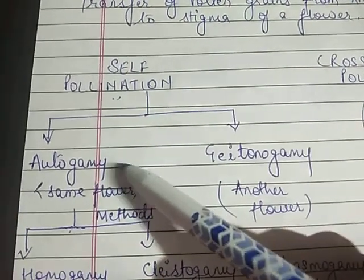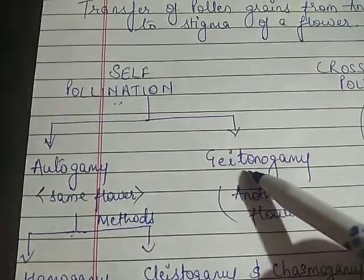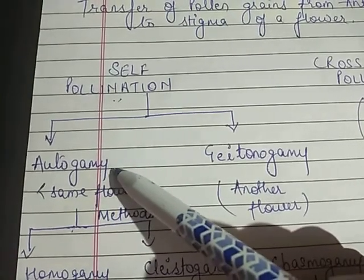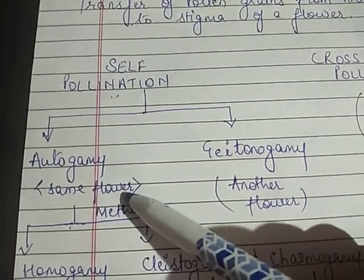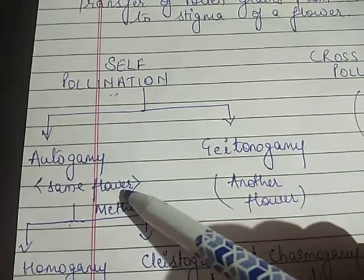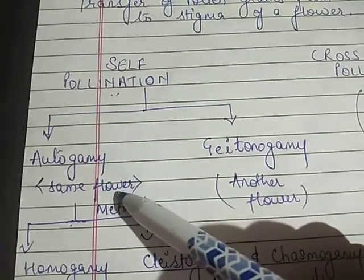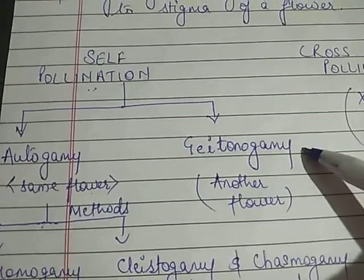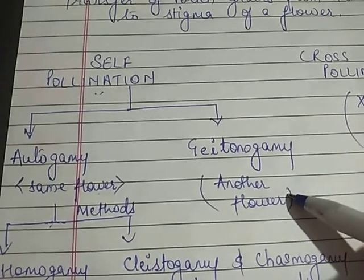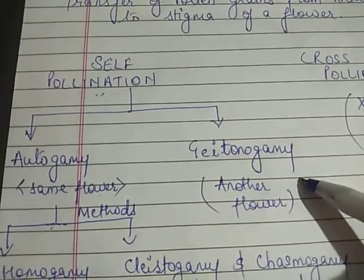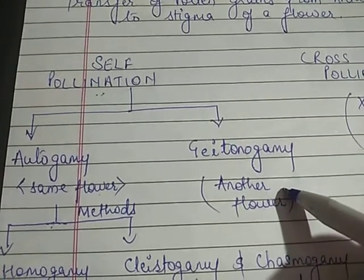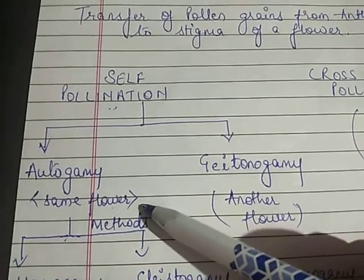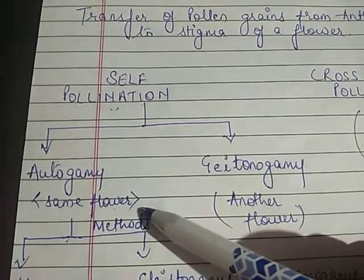Self-pollination has two types: autogamy and geitonogamy. Autogamy is when the flower is the same — both the anther and stigma are present on the same flower. In geitonogamy, the flowers are different: the stigma of one flower and the stamen of another flower on the same plant.